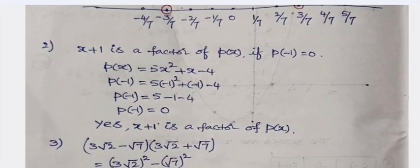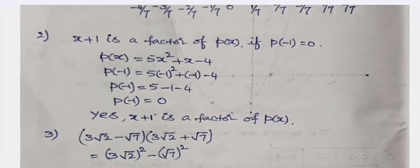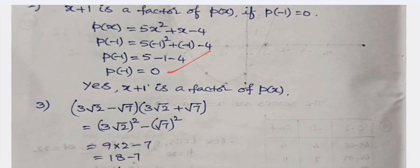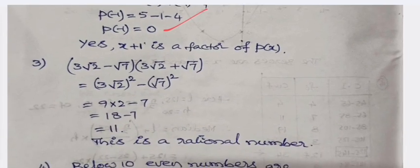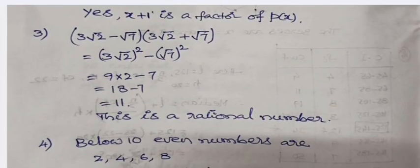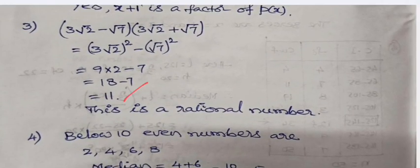x + 1 is a factor of p(x) if p(-1) = 0. For this we verify it, so p(-1) is clearly 0. Yes, x + 1 is a factor of p(x). The product of (3√2 - √7)(3√2 + √7) is 11, which is a rational number but not irrational.